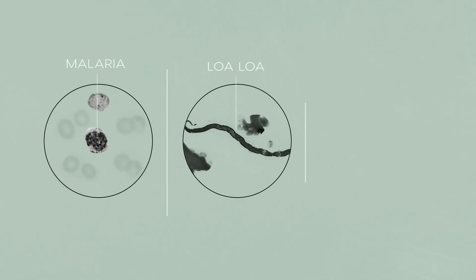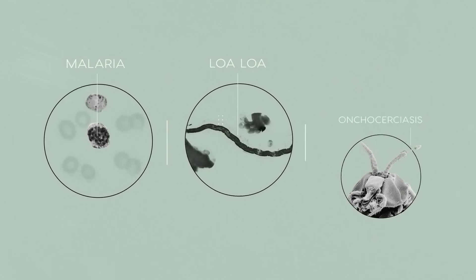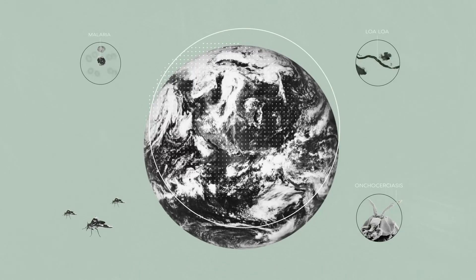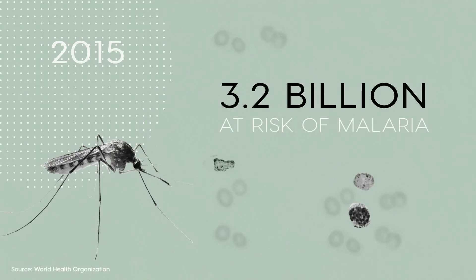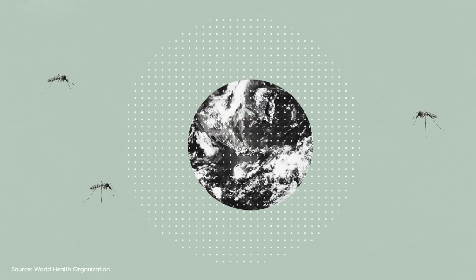Parasitic diseases like malaria, loa loa and river blindness affect billions of people every year. In 2015, 3.2 billion people were at risk of malaria alone. That's half the world's population.